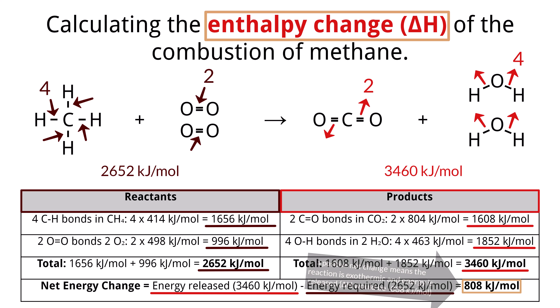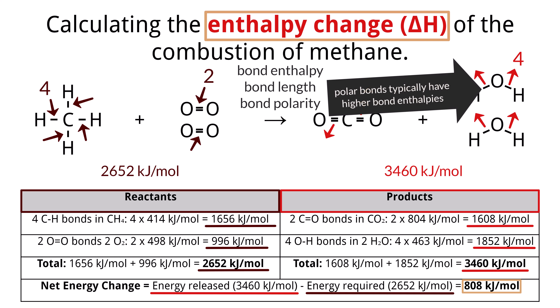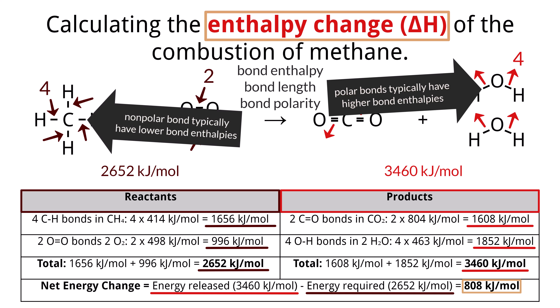From these values, we can also deduce the relationship between average bond enthalpy, bond length, and bond polarity. Polar bonds, such as the O–H bond — with a bond enthalpy of 463 kJ/mol and a bond length of 97 × 10⁻¹² m — typically have higher bond enthalpies than non-polar bonds due to the significant difference in electronegativity between the bonded atoms. For example, C–H bonds, which are non-polar, have a lower bond enthalpy of 414 kJ/mol and a longer bond length of 108 × 10⁻¹² m. This highlights how increased electrostatic attraction in polar bonds leads to stronger and shorter bonds compared to non-polar bonds.